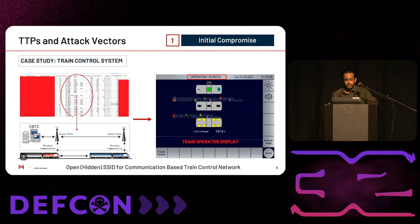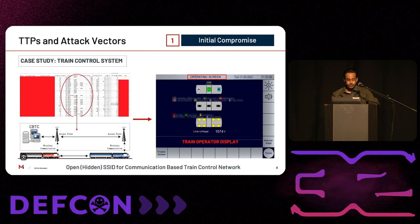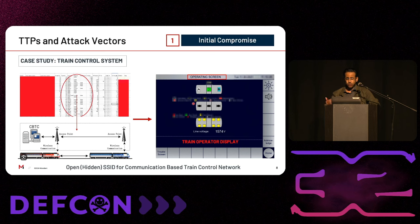The first case study is for a communication-based train control system. In a CBDC network, onboard ECUs typically connect to the back-office network through radio-based communication such as wireless or cellular. In this specific case, we found that the CBDC radio network was implemented using a hidden but essentially open SSID, providing unauthenticated access to the onboard embedded network on the trains. We used that open wireless network to connect to a VNC session on one of the operator displays in the local cab. Insecure wireless networks are less common now, but we still find examples of unauthenticated protocols or legacy encryption in older networks.